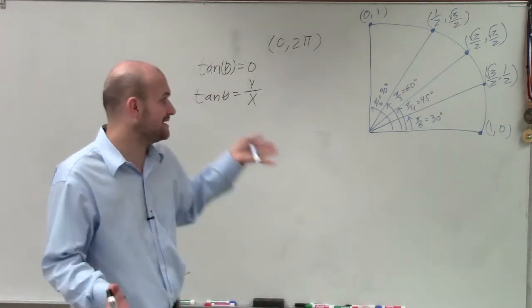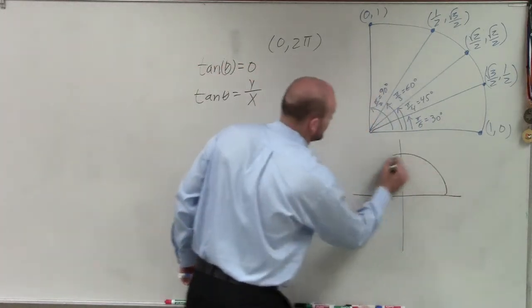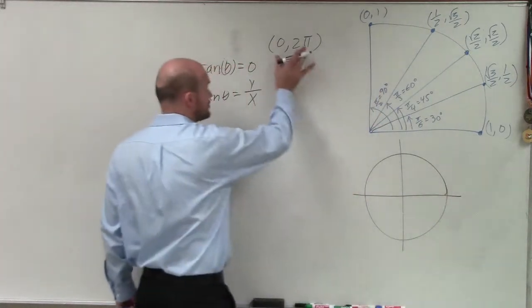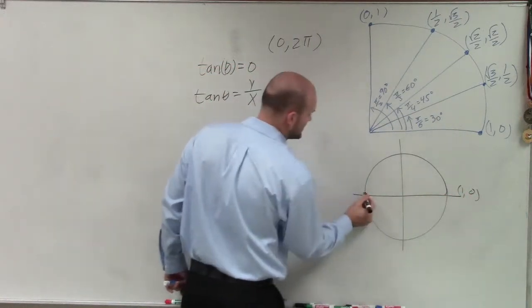So therefore, what I'm going to do is I need to go ahead and look at my unit circle and determine when is the y-coordinate equal to 0 between our constraint of 0 and 2 pi. Well, there's only two points where the y-coordinate is equal to 0.